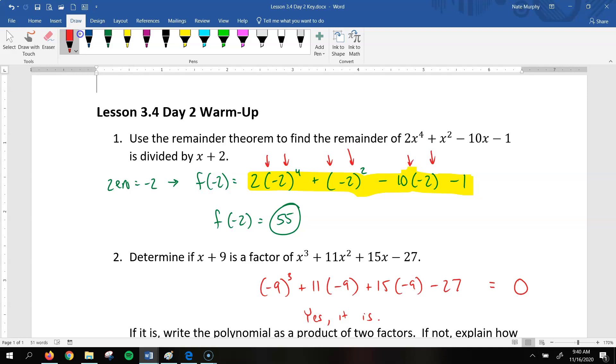you're going to get the answer wrong. All right, so when you plug that in your calculator, you get 55 as your answer. So if you were to divide that polynomial by x plus 2, you would get a remainder of 55. So it does not divide evenly. All right, let's look at number 2.